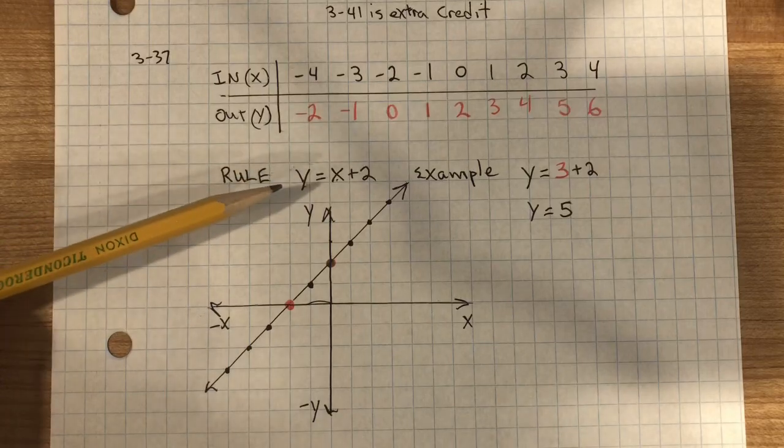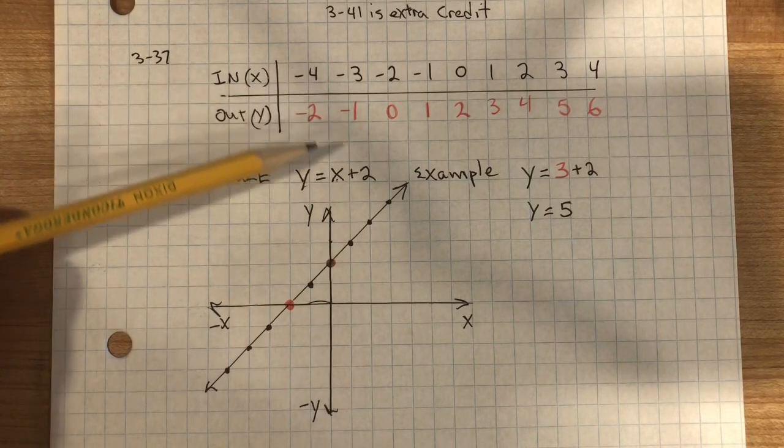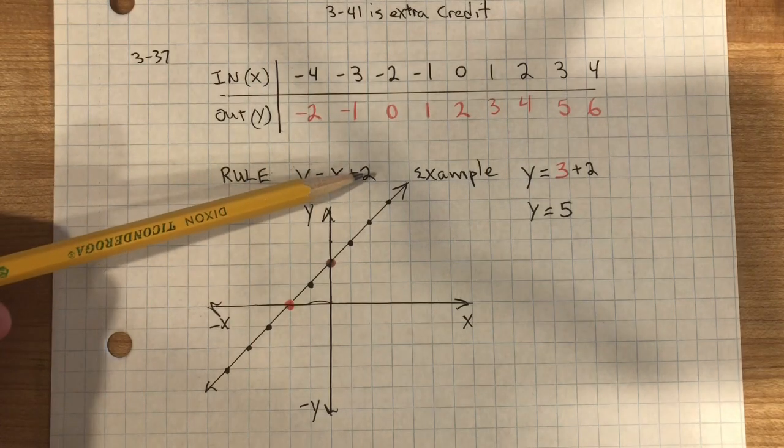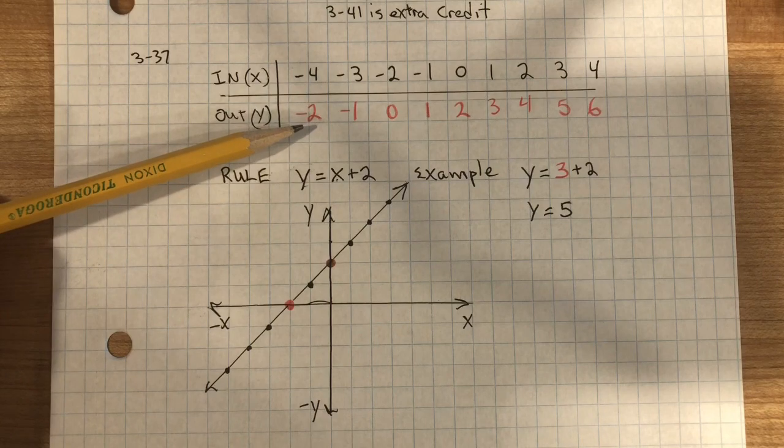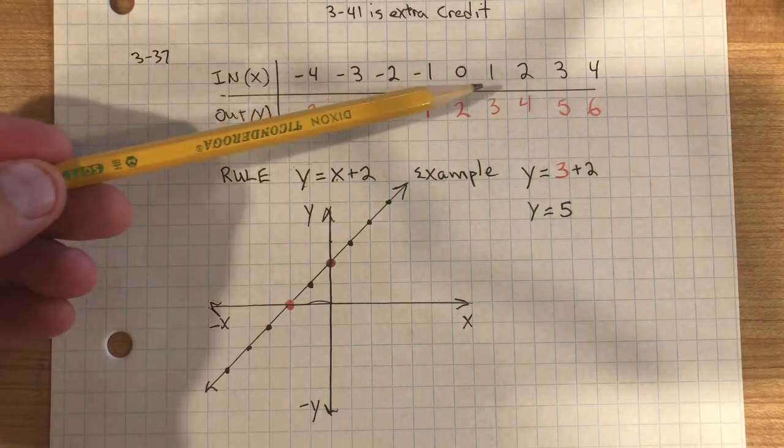For the rule y equals x plus 2, if the input x equals negative 4, you'd have negative 4 plus 2 equals negative 2. You would do that for each of the input values.